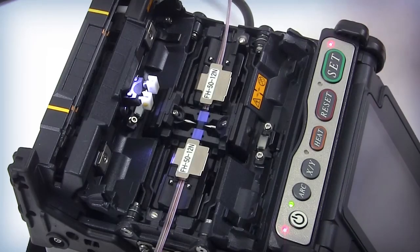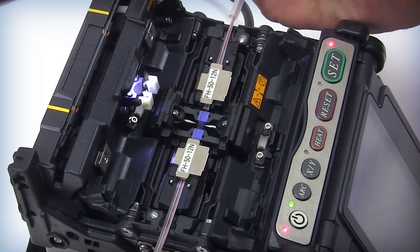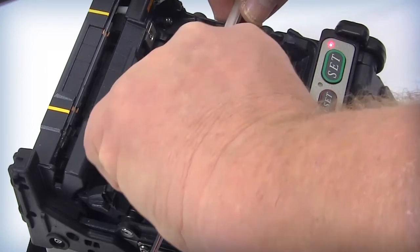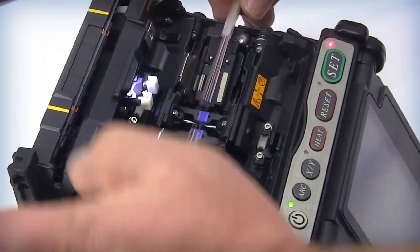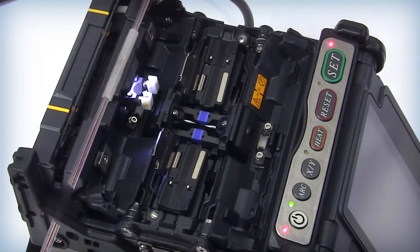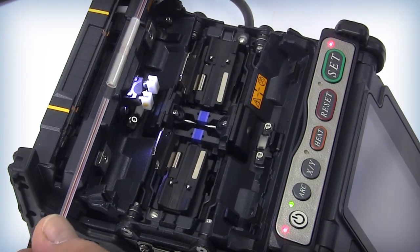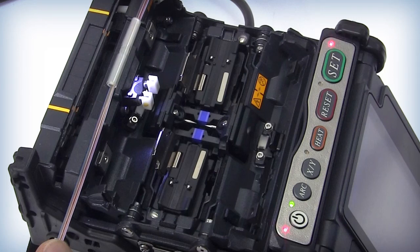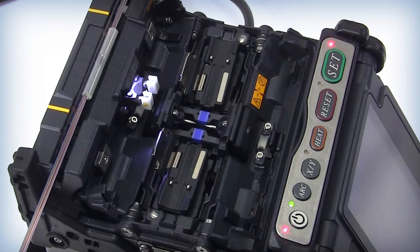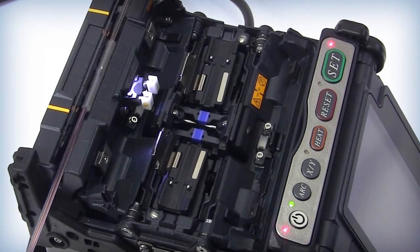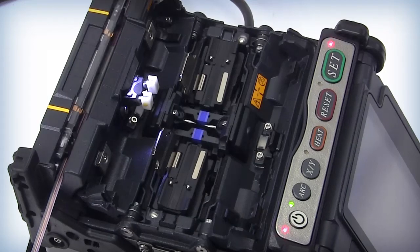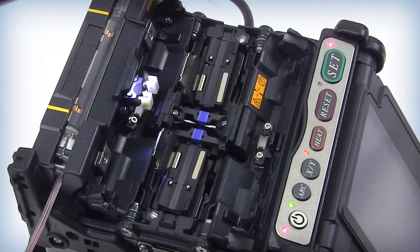Position the splice sleeve close to the fiber holder and lift the clamp on the opposite side to release the tension on the fibers from the proof test. Support the splice sleeve and release the second fiber holder clamp. Holding the fibers taut, use the positioning ribs on the heater to center the splice sleeve over the splice. Keep tension on the fibers and lower the centered splice sleeve with the glass stress rod below the splice into the heater.